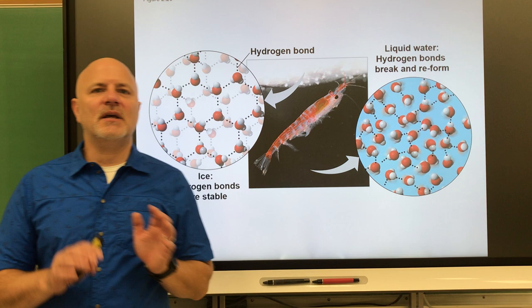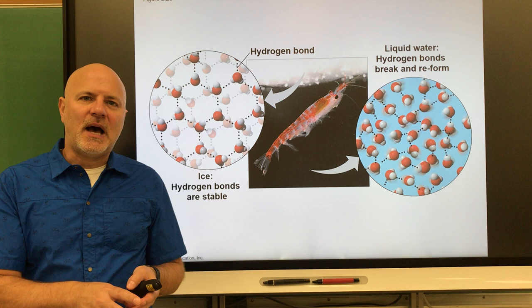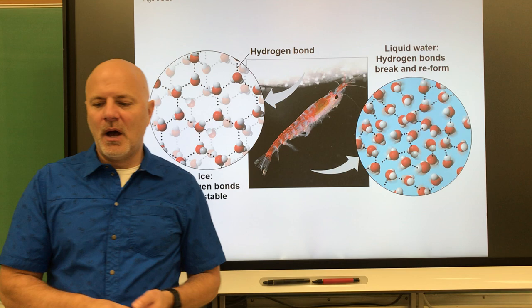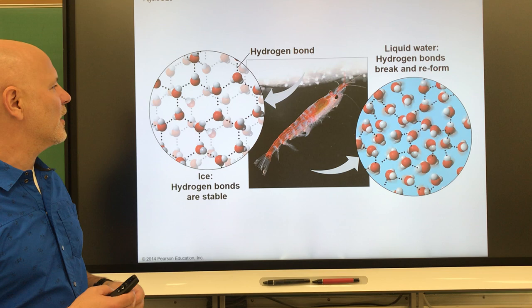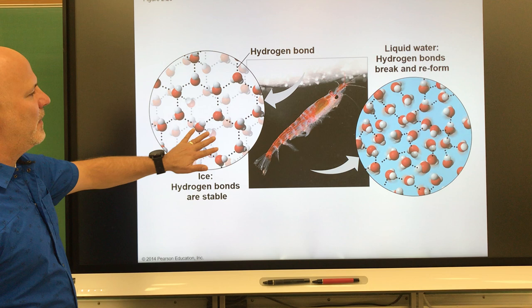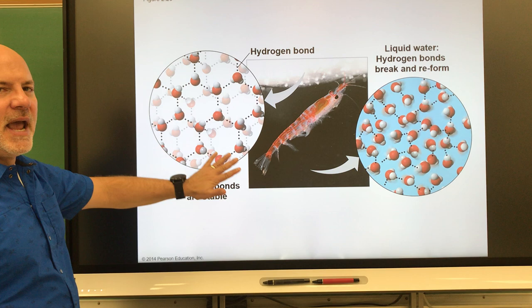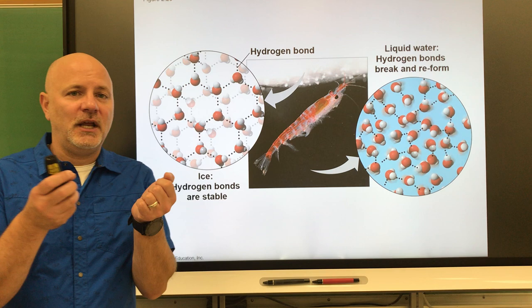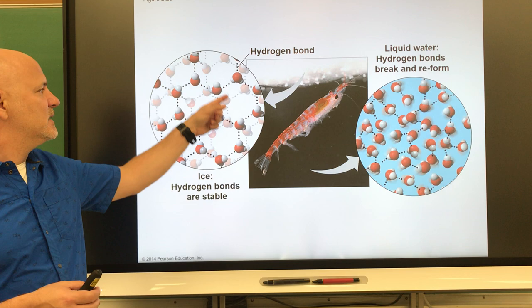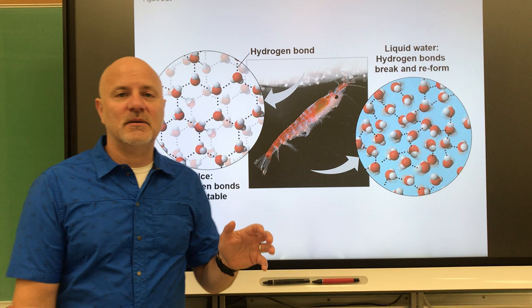Unlike most substances, ice is less dense than liquid water. Most substances freeze from the bottom up, but water is not like that. This allows ice to float on liquid water. When water freezes and forms hydrogen bonds with other water molecules, you get a crystalline pattern that literally spaces the water molecules apart. Liquid water molecules get closer together down to about four degrees Celsius, then they start forming these crystalline patterns which space them out.